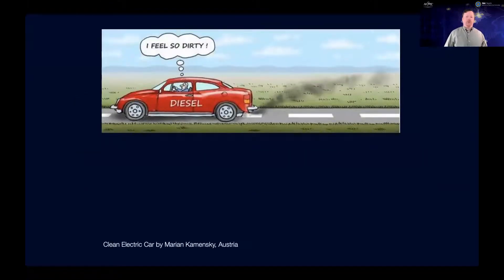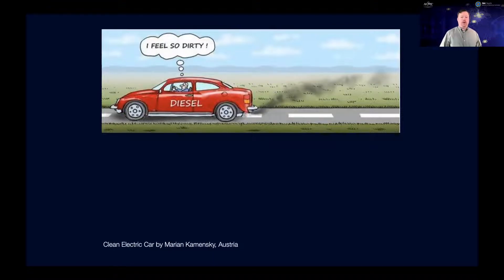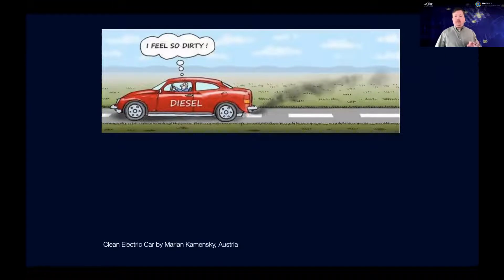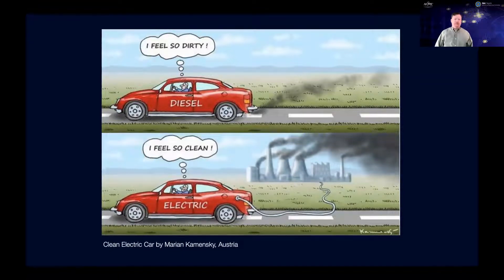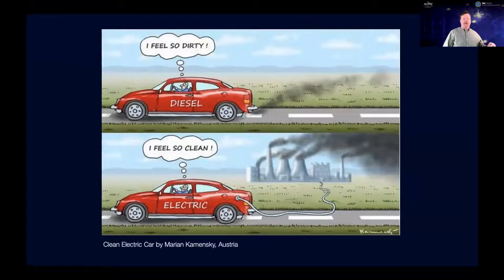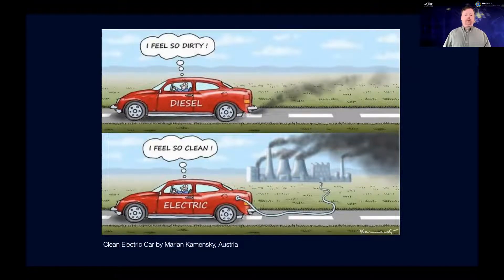Why does it depend? Look at this cartoon by artist Maryan Kamensky from Austria. In the top picture, a gentleman driving a diesel car is spitting out black smoke from the tailpipe and feels dirty. As a side note, modern engines don't do that — our combustion and after-treatment systems have advanced enough that we've effectively solved the criteria pollutants problem, other than for things like cold starting. In the bottom picture, a gentleman driving an electric vehicle feels very clean, no tailpipe. But how does he get the electricity to charge that vehicle? That depends on where you are in the world. In this case, it looks like that's a coal-fired power plant behind him — so he's not as clean as he thinks.